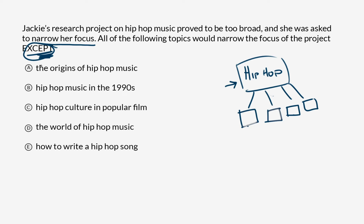The origins of hip-hop music? That's narrower — it focuses on a specific time. Hip-hop music in the 1990s? Same deal, that's also narrowing down to a specific time frame. Hip-hop culture in popular film? That's the culture around the music as portrayed through film, so that's narrower still.